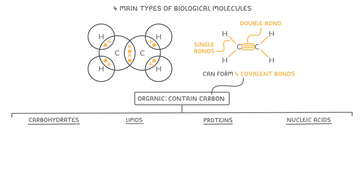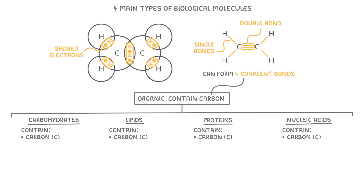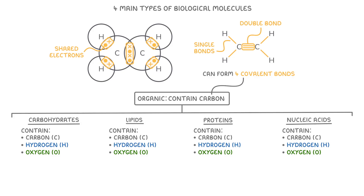And if we zoom in on this molecule a bit, it's also worth noting that all these bonds are really strong as well, because of the shared electrons that exist between the atoms. These four main types of biological molecules also include other elements. They all contain not only carbon, but also hydrogen and oxygen. Carbohydrates only contain carbon, hydrogen and oxygen, but lipids, proteins and nucleic acids can contain other extra elements too. For example, proteins always contain at least some nitrogen, whilst nucleic acids always have both nitrogen and phosphorus as well.